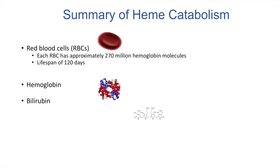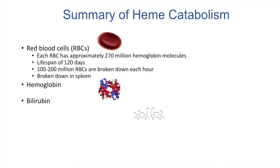There are actually 100 to 200 million red blood cells broken down each hour. Red blood cells are typically broken down within the spleen because the spleen has very small vessels which the blood cells get squeezed through, and the spleen kind of tests the strength of the red blood cell membrane. If the red blood cell is old or damaged, it'll be broken down in the spleen, but red blood cells are also broken down to a smaller degree in the liver as well.